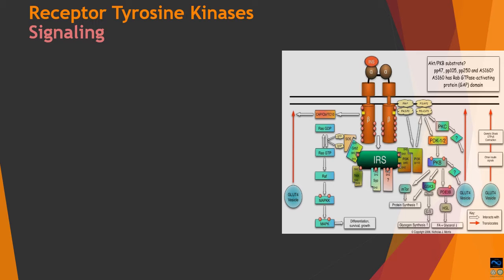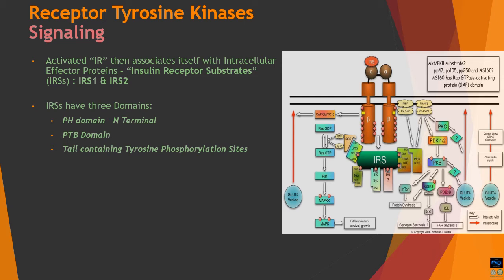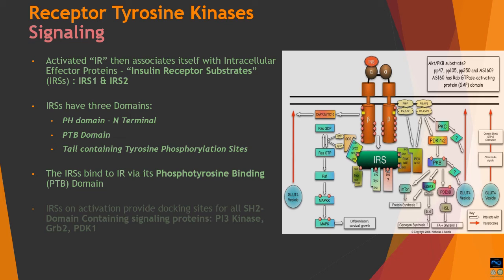Moving to the second phase — internal cascading. The first downstream proteins responsive to the activated insulin receptor are insulin receptor substrates, IRS1 and IRS2. IRS has three domains: a PH domain, a PTB domain, and a tail containing tyrosine phosphorylation sites. IRS binds to the insulin receptor via its phosphotyrosine-binding (PTB) domain, utilizing the phosphotyrosine docking sites on the activated receptor, and in turn gets activated by phosphorylation.